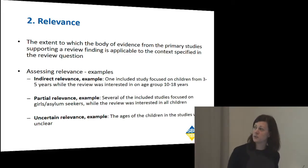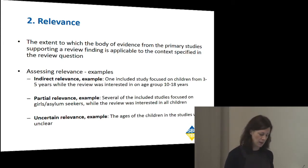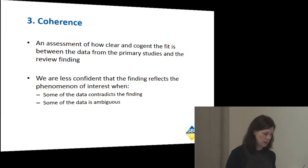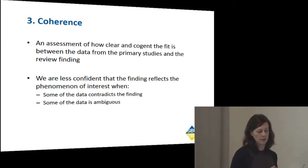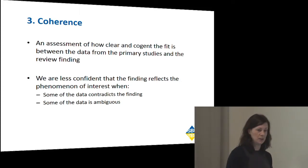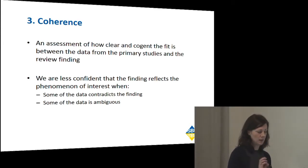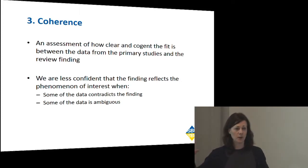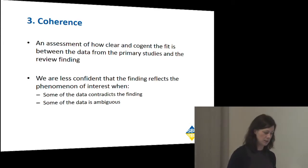In all of these relevance cases, you need to consider whether you lose confidence in the review finding. The third component is coherence: an assessment of the fit between the data in the primary studies and the review finding. You become less confident in the review finding if some of the data contradicts the finding or some of the data is ambiguous. The methods used for producing findings will affect whether or not you have contradictory data.